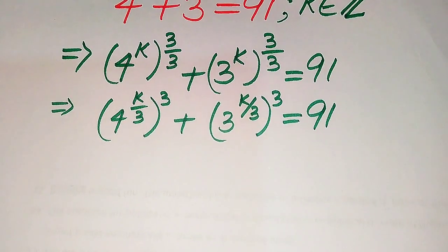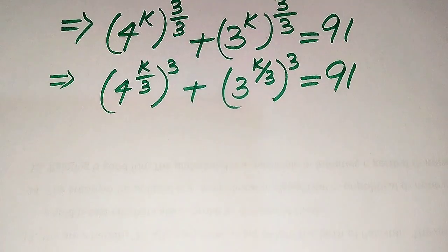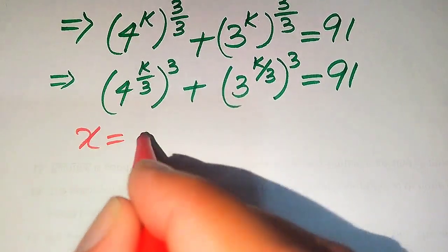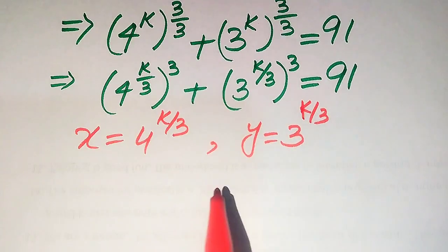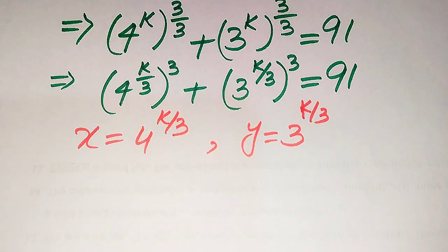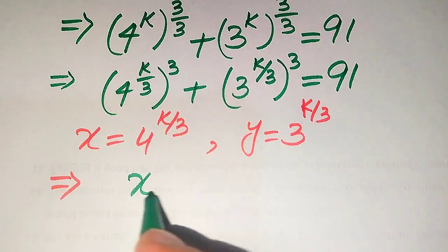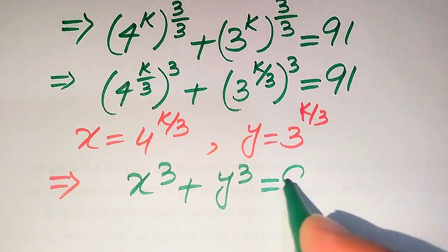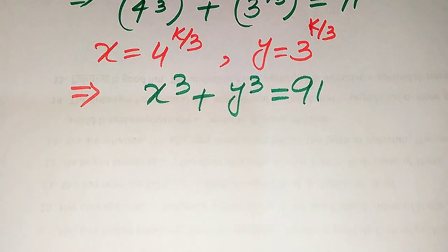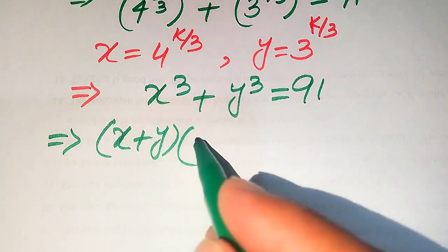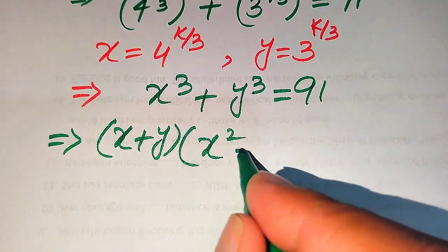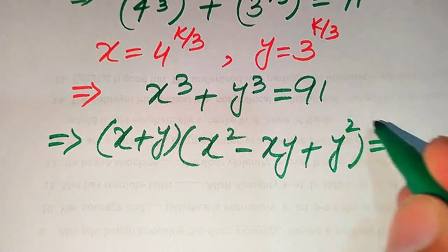In the next step we convert this exponential equation into cubic form. We let x = 4^(k/3) and y = 3^(k/3). Substituting these two values into the above equation converts it into x³ + y³ = 91. On the left-hand side we apply the cubic formula: x³ + y³ = (x + y)(x² − xy + y²), so (x + y)(x² − xy + y²) = 91.